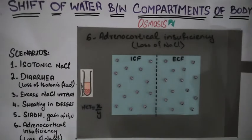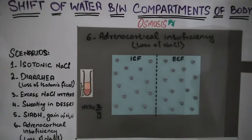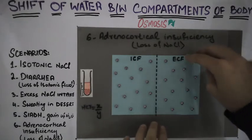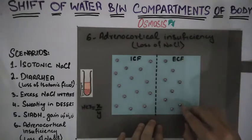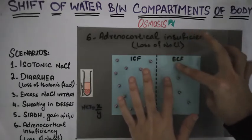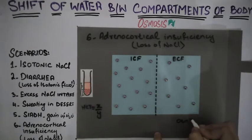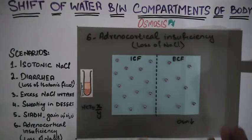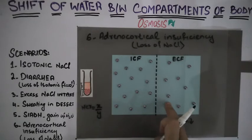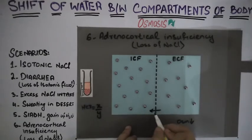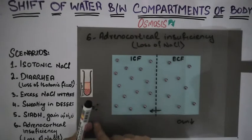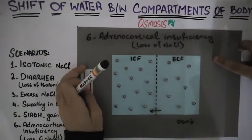Coming to our last scenario: adrenocortical insufficiency. The adrenal cortex produces aldosterone, which causes reabsorption of sodium chloride. If there is adrenocortical insufficiency, sodium chloride will not be reabsorbed and will be lost in urine, resulting in a decrease in osmolarity of the extracellular fluid. This will lead to a shift of fluid from the hyposmolar extracellular fluid into the intracellular fluid.